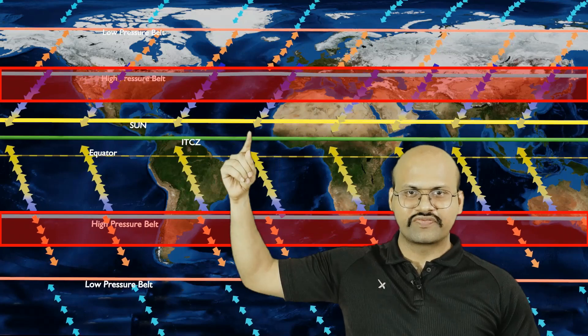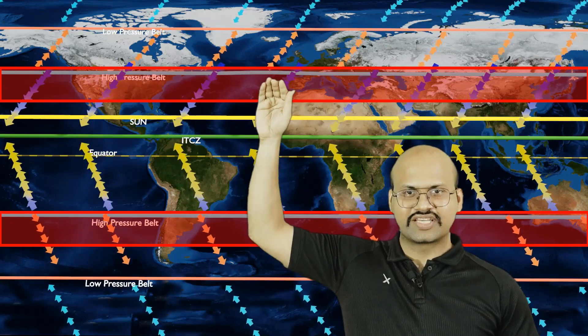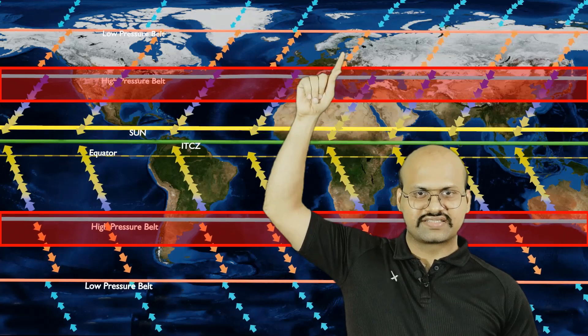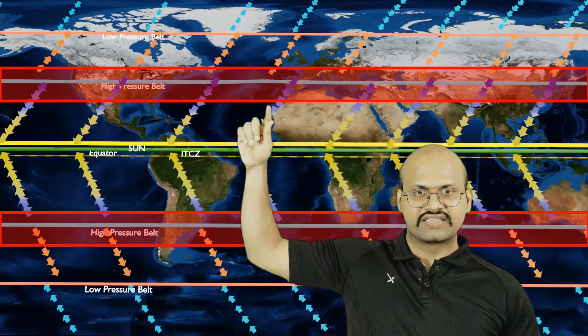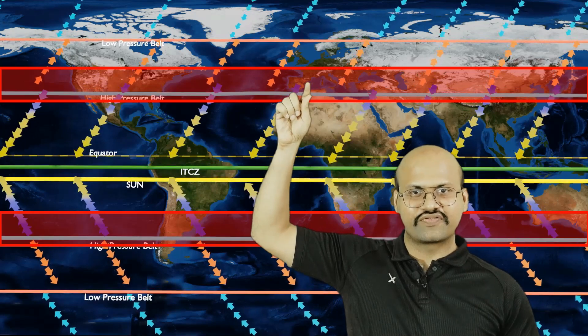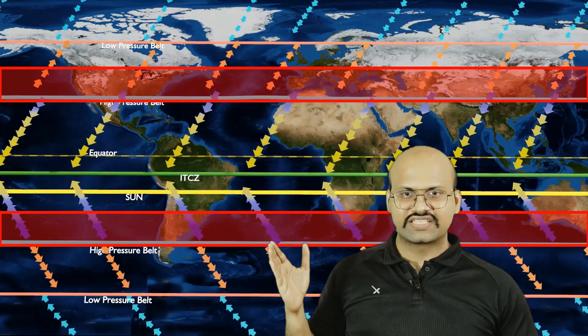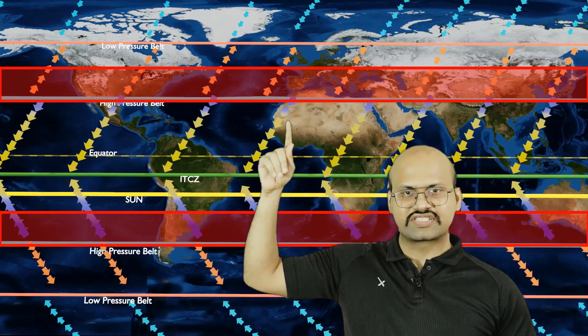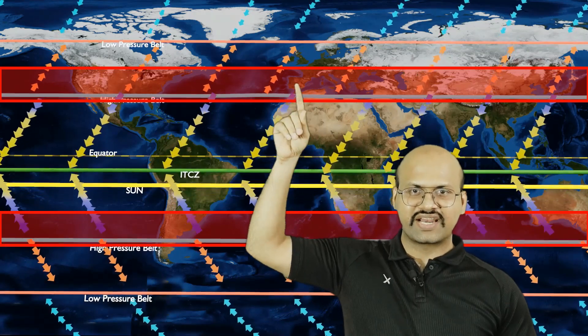Because of this movement, a very important feature occurs — there is a region where the direction of permanent winds changes. Right now winds move from one direction, but when the sun moves into the southern hemisphere the wind direction changes and brings rainfall over this region in winter. When the sun comes back up, the easterlies start flowing over the Mediterranean region, bringing summer with no rain in that season.